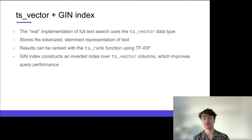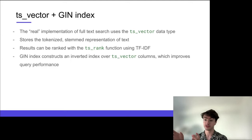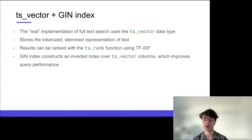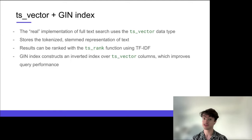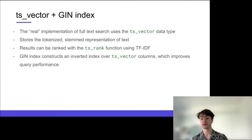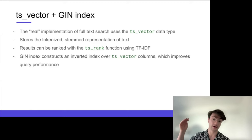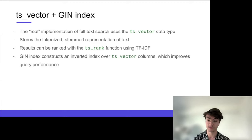The proper way to do full-text search in Postgres uses tsvector, which stores the tokenized stem representation of text — breaking words down to their roots. You can rank results using ts_rank, which implements TF-IDF: term frequency–inverse document frequency. Documents where a searched keyword occurs more frequently rank higher, and if that document is less frequently found in the corpus it should rank higher too. If you search for 'cheese' and one document has many occurrences while others have none, it should rank higher.